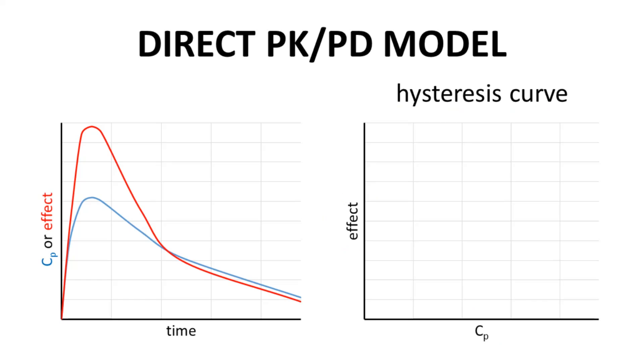So we start at the origin. CP increases initially and effect increases a little faster. Once CP reaches its maximum on the x-axis, effect also reaches its maximum on the y-axis.